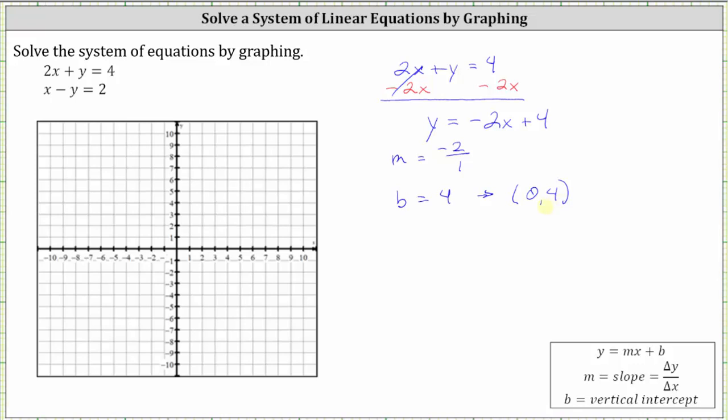So now we plot the vertical intercept of (0, 4), which is here. And then from here, we use the slope to find additional points. Because the slope is -2/1, where negative two is the change of y, sometimes referred to as the rise, and positive one is the change of x, sometimes referred to as the run, from the vertical intercept, we go down two units and right one. And we can do this over and over again.